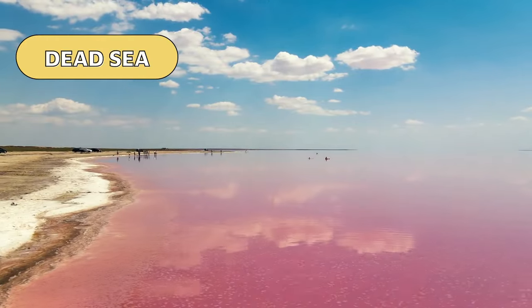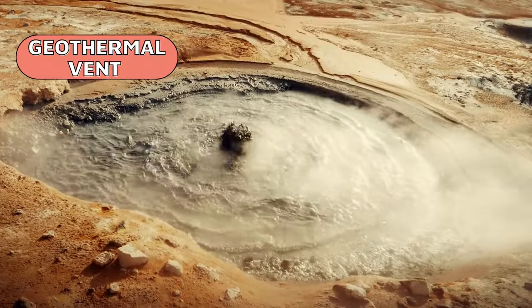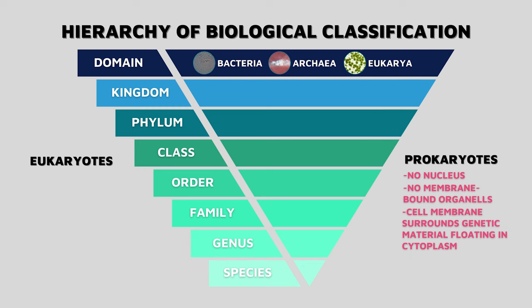Archaea are prokaryotes too, but they have some major DNA and structure differences that give them their own domain. Some like extreme salt environments or extreme temperatures, for example. Organisms that defy the typical limits that living things have are in this domain. The third domain, Eukarya, are eukaryotes — they have complex cell structures like membrane-bound organelles and DNA contained inside of a nucleus. Odds are, if you can see a living thing with your naked eye, it belongs to this domain.